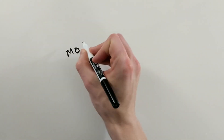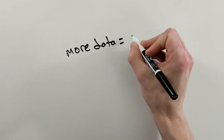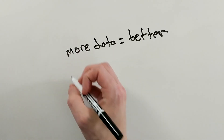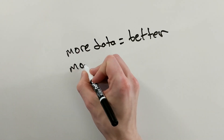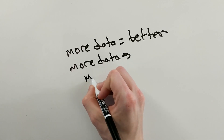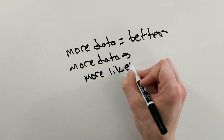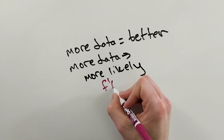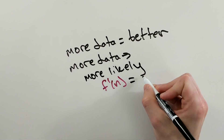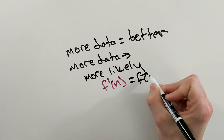This is why it's better to have as much data as possible. The more data, the more likely the output function is modeling the actual function you are looking for, instead of some random function describing your dataset.